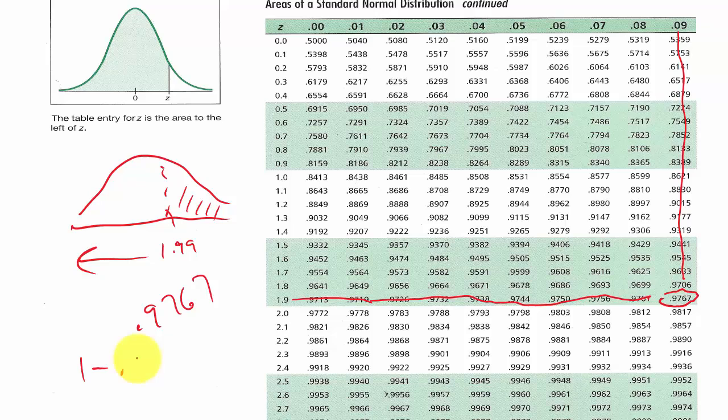So to find this area, our p-value would be one minus 0.9767, because we're looking for the probability that z is greater than 1.99. So that's this area, and this 0.9767 is the area to the left. So if we do one minus this, that will leave us with this area.